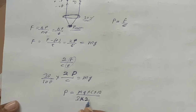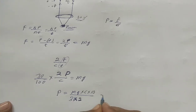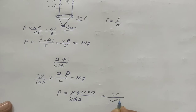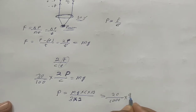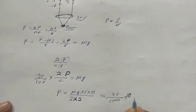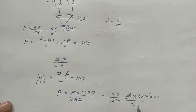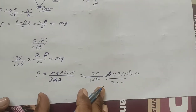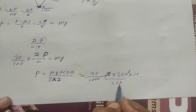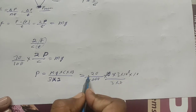Now substituting values: M is 20 grams, which is 20 by 1000 kg. G is 9.8, but for simplicity we take g as 10. C is 3 times 10 to the power 8 m/s. Substituting: the factor of 10 by 3 into 2 — the 3s cancel and the 2s cancel.